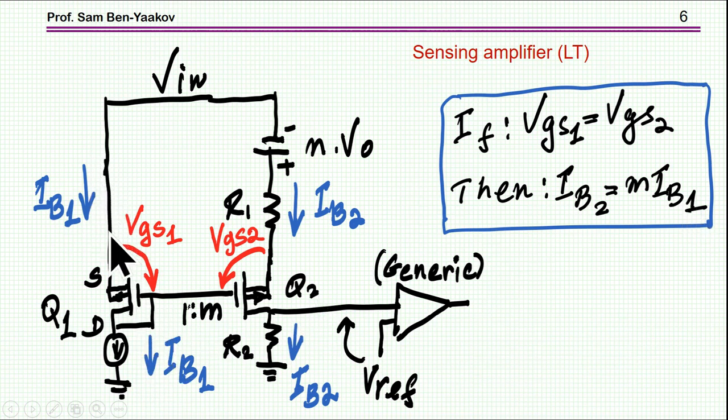Now the IB1, this current here, is controlled by a current source. So this current source actually imposes VGS, because due to this current source, the voltage of the gate is changing until VGS1 reaches the point that it is imposing IB1. So that IB1 is sort of causing this VGS to adjust to whatever is required, such that IB1 will be flowing here.